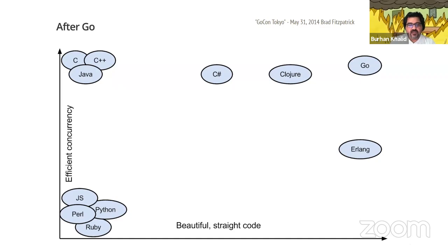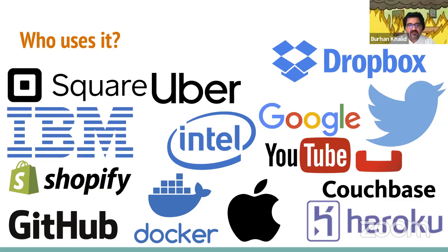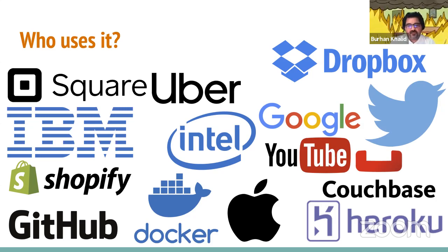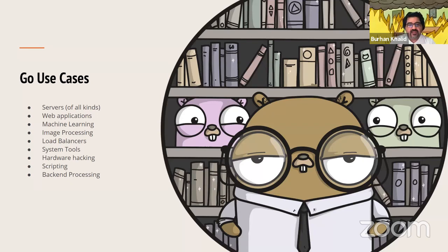Here's a slide with logos of all the companies that currently use Go — and this list will keep growing. The famous one you may know is Docker: the entire Docker ecosystem is written in Go. Also Google, YouTube, LinkedIn, and many more companies are adopting Go. Common use cases include all kinds of servers — which is relevant for hackathon teams — web application backends, machine learning, image processing systems, load balancers, system tools, hardware hacking, scripting, and backend processing. Basically, anything that runs behind the scenes is an ideal use case for Go.